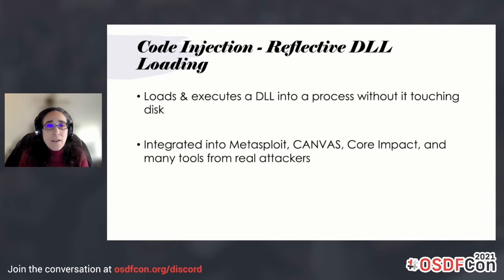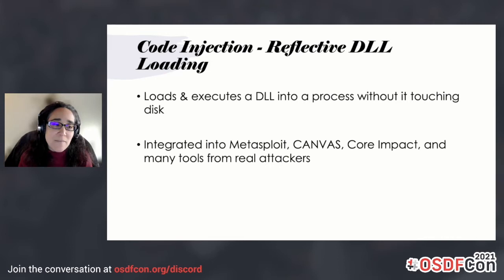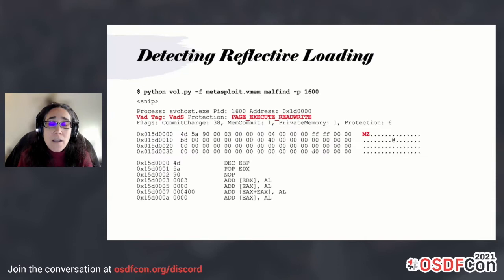The next technique is reflective DLL loading. This is where a malicious process loads a DLL into a process without it touching disk. All of the major attack frameworks have this capability. It's very useful because it doesn't touch disk, doesn't make as many artifacts on a dead box — it's only within memory. So you actually have to look at memory in order to find that information. If you're running the Malfind plugin, it very easily stands out.